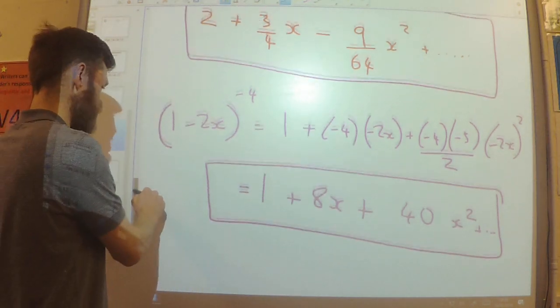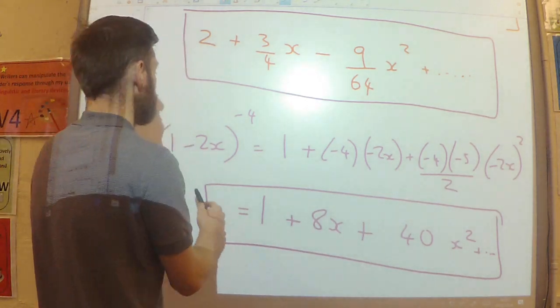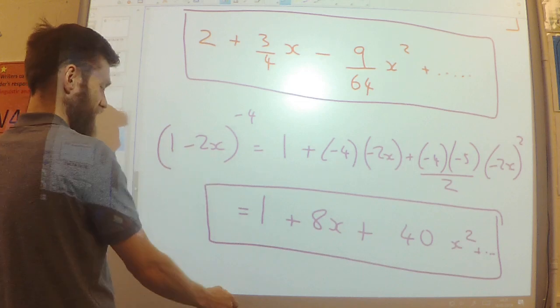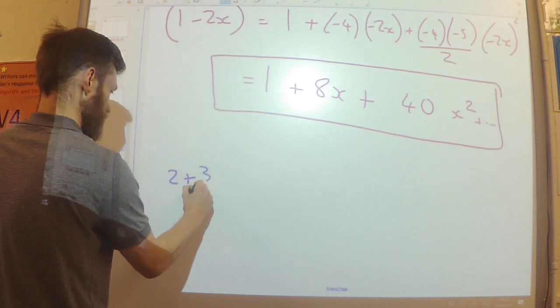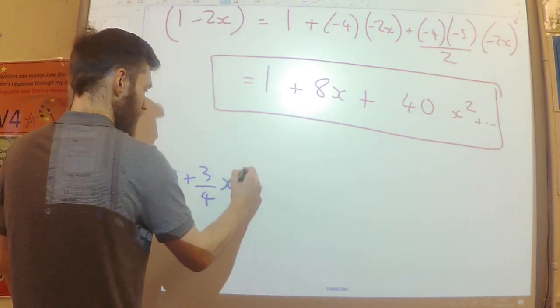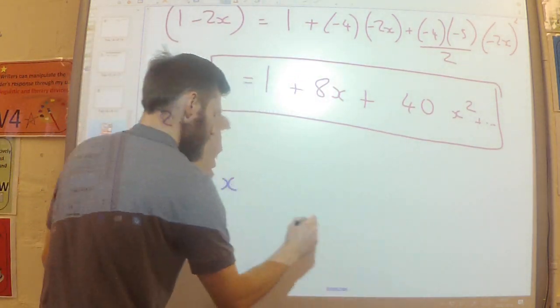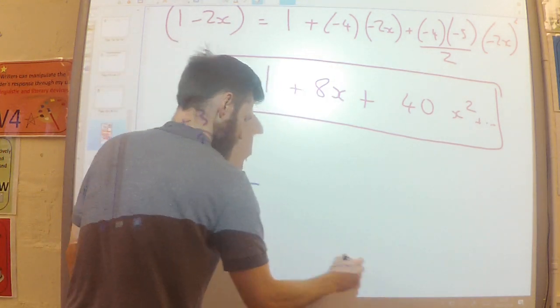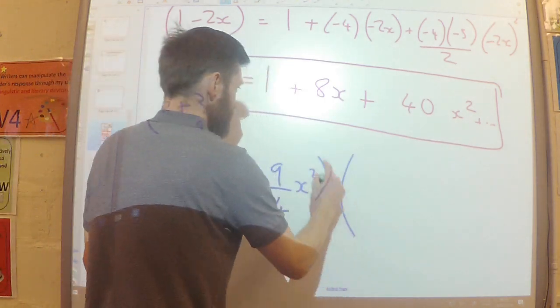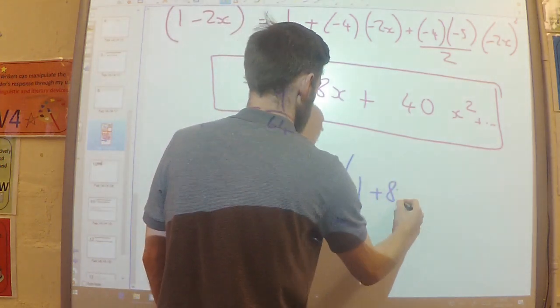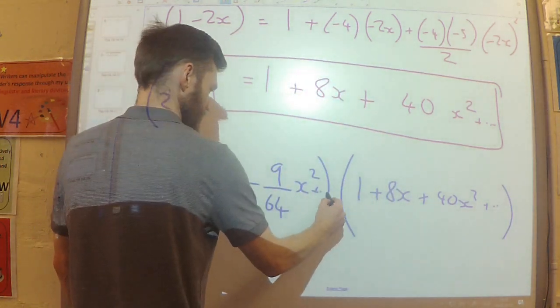All I need to do now is multiply both of my expansions together and simplify. So let's rewrite both of my expansions together. So 2 plus 3 quarters x, plus minus 9 over 64x squared. So there's the first bracket. Here's the second bracket. And they both have a plus dot dot dot there.